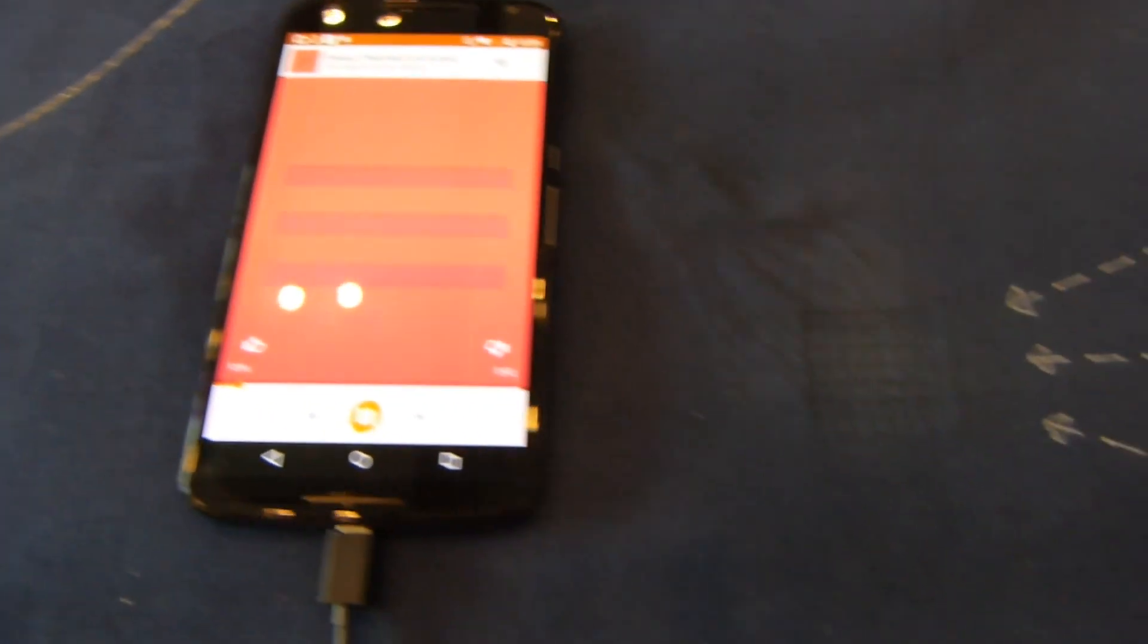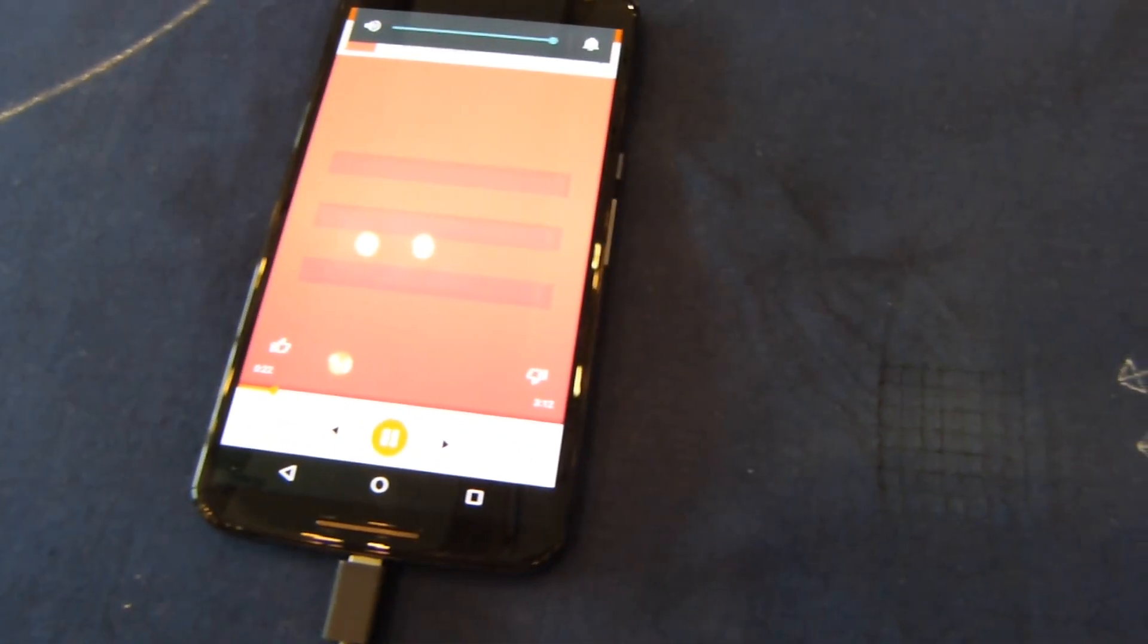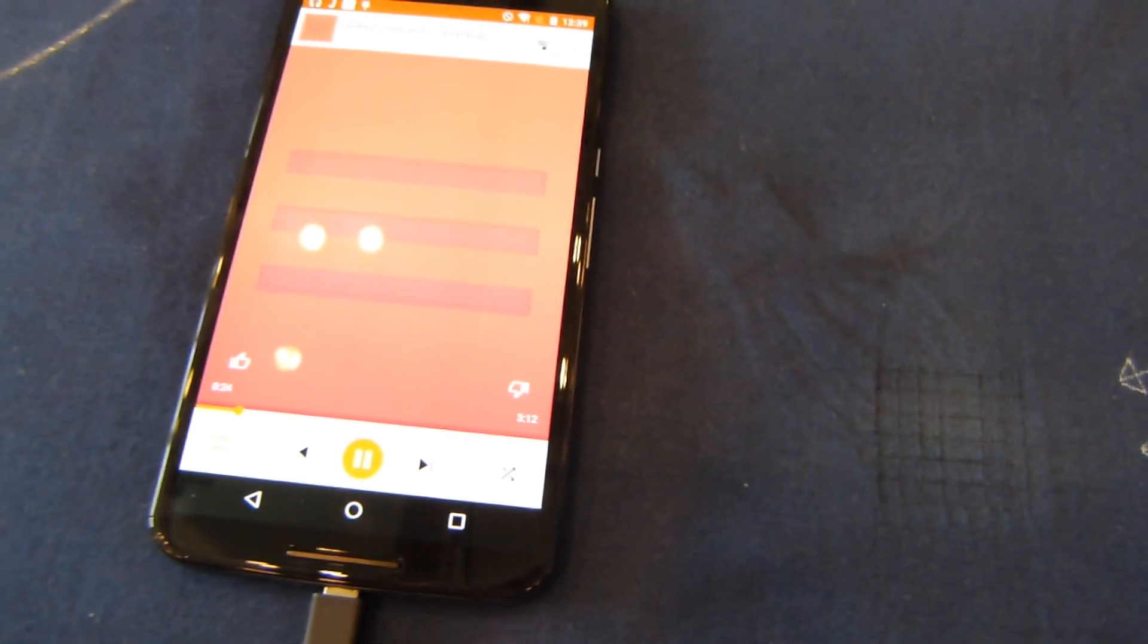You can't hear because the volume is down but I will fix that because there's a command here to control the volume. So I'm going to swipe up to control the volume. So there we got the volume going up.